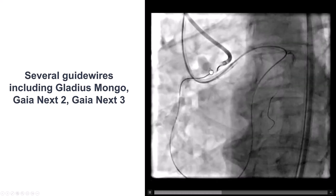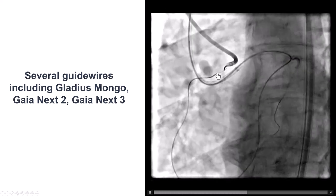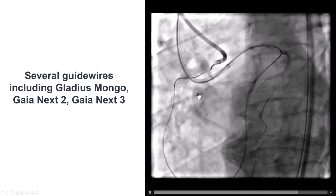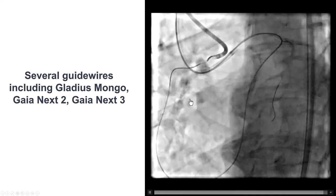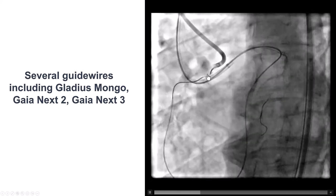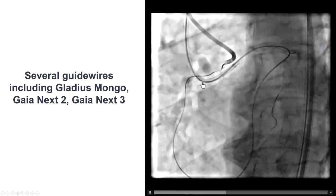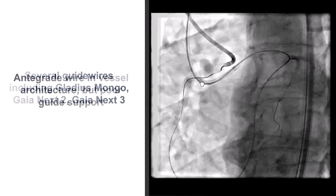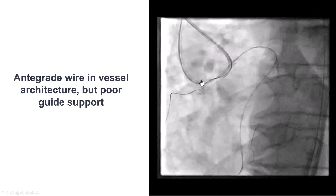This is a Carlino injection. We can see there is some staining — we may have punctured one of the small conus branches — which will become relevant as we discuss further in the case.